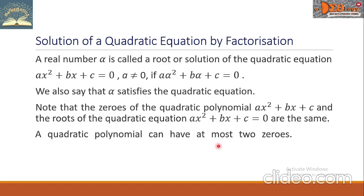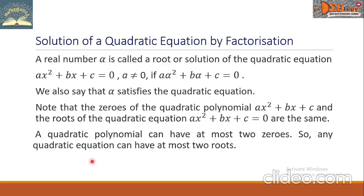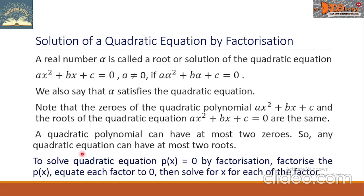A quadratic polynomial can have at most two zeros, so any quadratic equation can have at most two roots. To solve a quadratic equation p(x) = 0 by factorization: factorize p(x), equate each factor to zero, then solve for x for each factor.